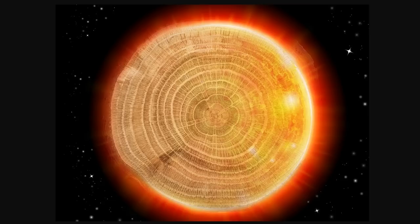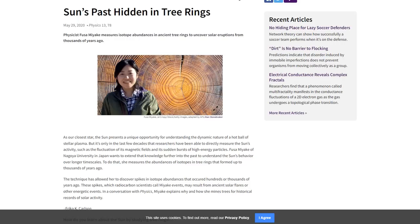These huge bursts of cosmic radiation are known as Miyake events, named after physicist Fusha Miyake who measured isotope abundance in ancient tree rings to uncover these solar eruptions from thousands of years ago. Many people thought they were just massive solar flares like the Carrington event. But what we're going to reveal is that there is something quite different and even more dangerous and unknown.